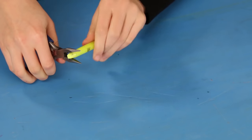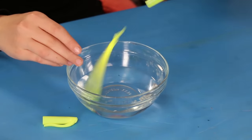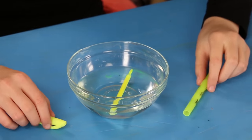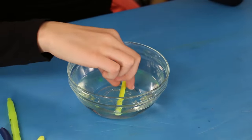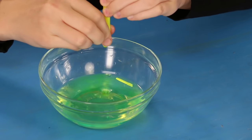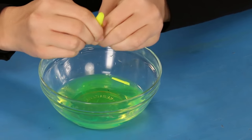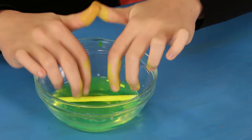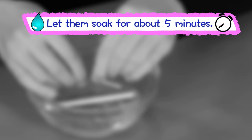Next, use pliers to open the highlighter. Dump the writing tip and the rest of the ink cartridge into a little bit of water. Squeeze all excess ink from the cartridge. Let them soak for about five minutes.